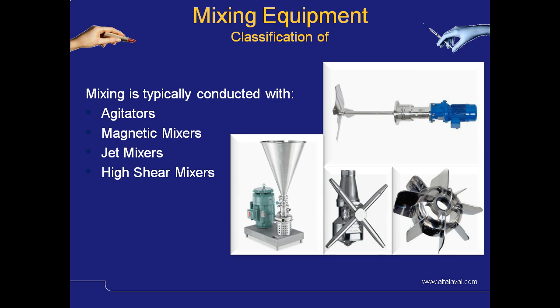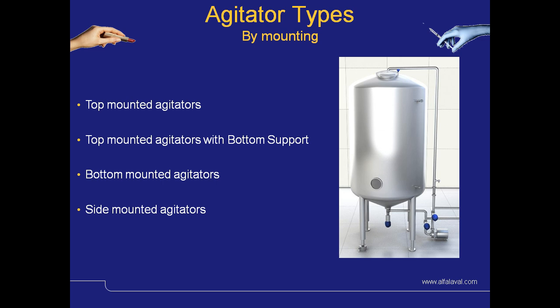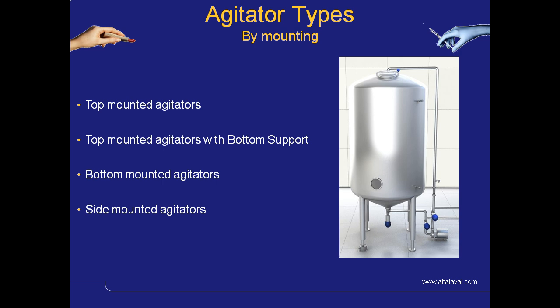These include agitators, magnetic mixers, jet mixers and high shear mixers. First, we will briefly look at agitators. These consist of an impeller fitted to a shaft; the shaft in turn is either driven directly by a motor or via a reduction gearbox. Because of the variety of tasks that agitators may be required to do, the type of tank and tank geometry may mean that the unit can be mounted in the top of the tank, sometimes with a bottom support, or alternatively mounted in the bottom or on the side of the tank, positioned to suit the application.